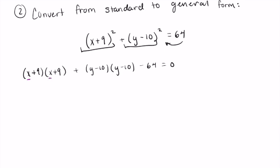y² - 10y - 10y + 100 (negative 10 times negative 10 gives me a positive 100) - 64 = 0. Combine and simplify: I have x² + 18x + 81 +